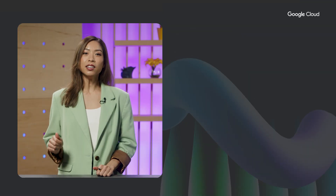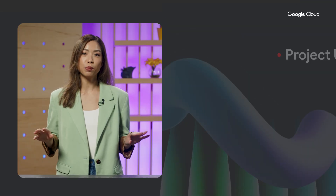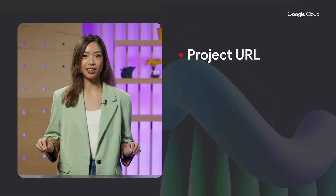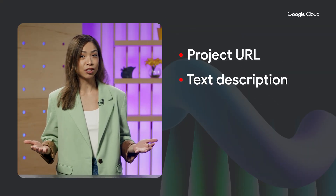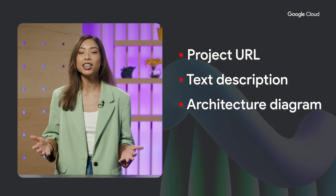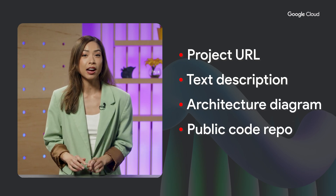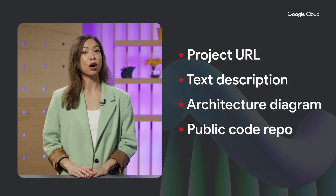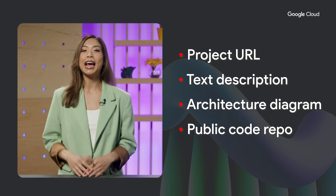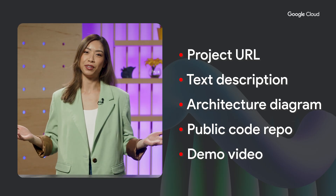Let's say you're ready to submit a winner. You'll need a hosted project URL, a text description of your project, an architecture diagram, a URL to your public code repo, and a demo video.